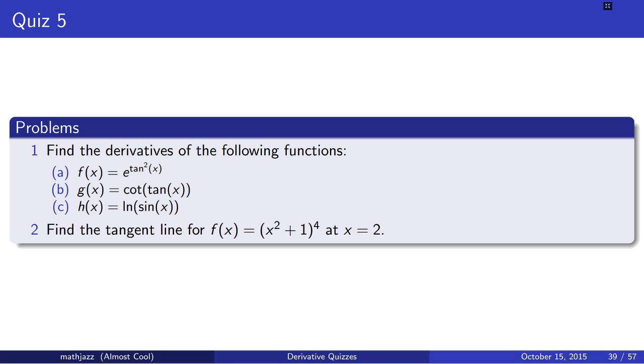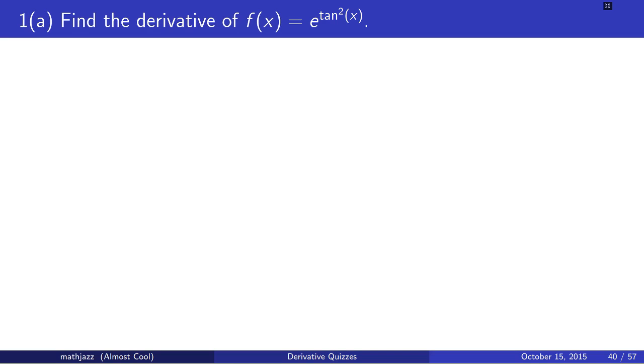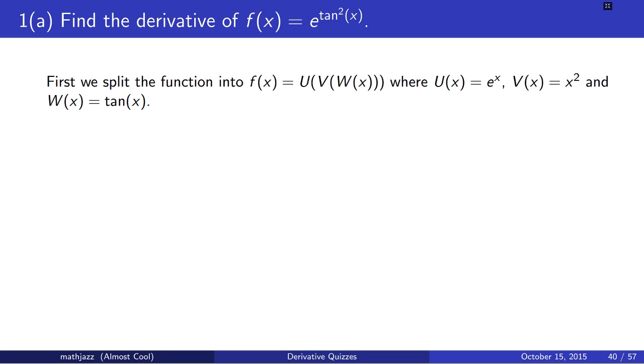You can pause the video now, and when you unpause it, I'll give you the solutions to the problems. Question 1a. Find the derivative of f of x equals e to the tangent squared of x. First, we're going to split the function into three functions, each one composed with the next.